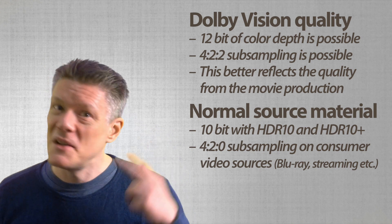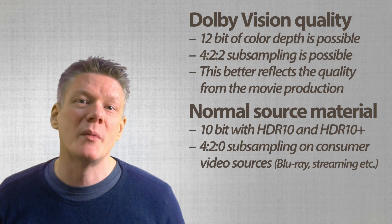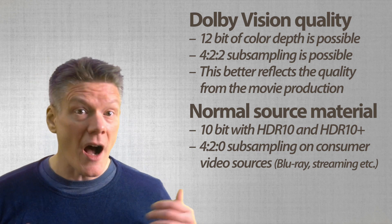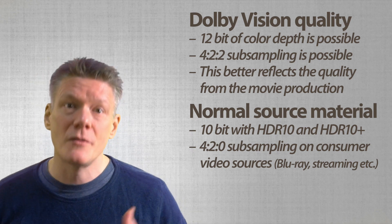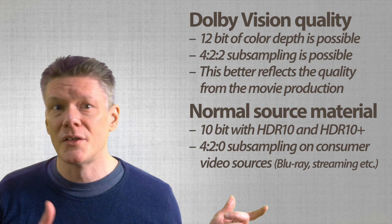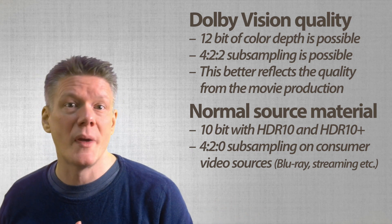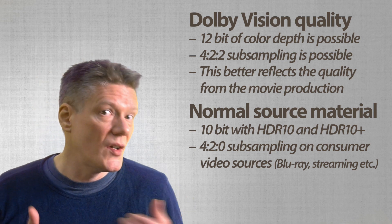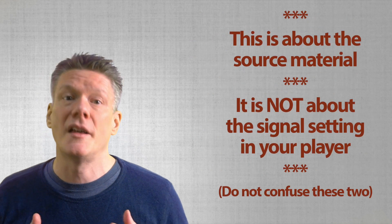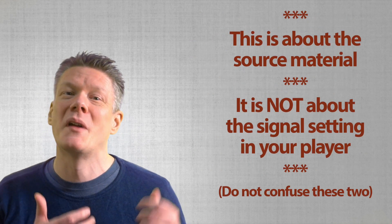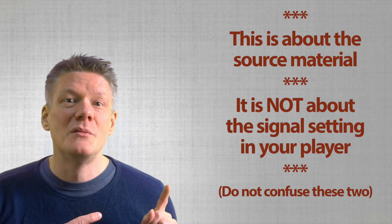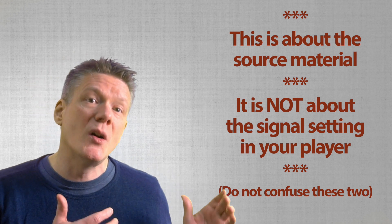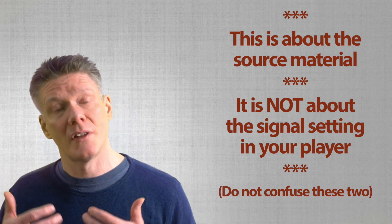Second, Dolby Vision uses up to 12-bit YCbCr with a color subsampling of 4:2:2. This is a higher level than normal and closer to the quality in the production stage. All other consumer video sources are based on 4:2:0 subsampling — that is Blu-ray, streaming, broadcast, and so on. You might configure your Blu-ray player or PC to output something else, but this only changes the HDMI output signal, not the video source itself.